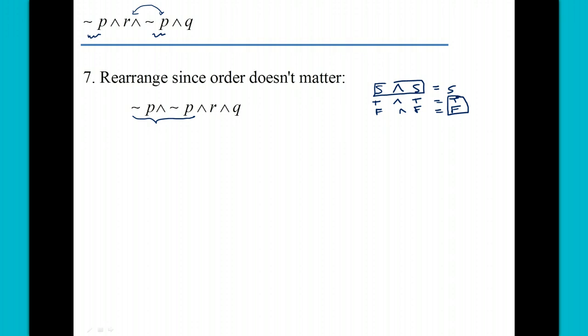So there's no need to write it like that. It's redundant to say S and S, we can just say S. It's redundant to say not P and not P, we can just say not P. And then we have our statement as not P and R and Q.